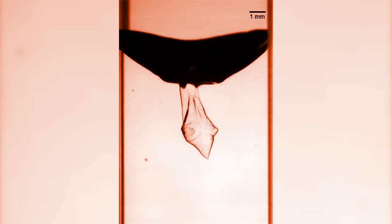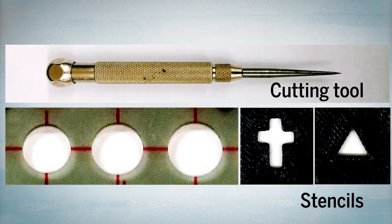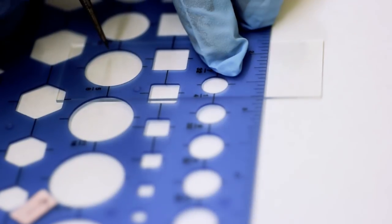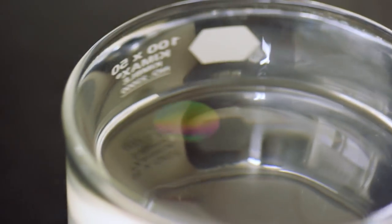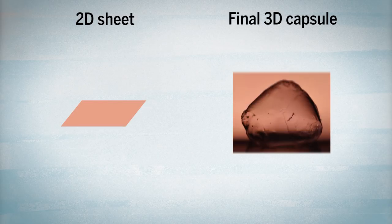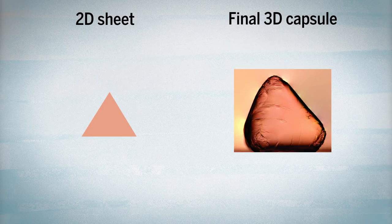The whole process begins with the thin polymer sheets, which are cut into various designs. The wrapper's 2D shape determines the resulting 3D shapes of the capsules.